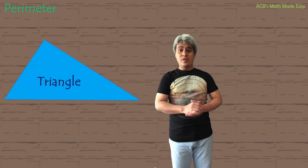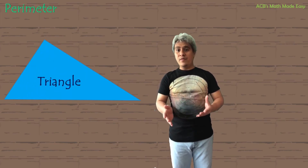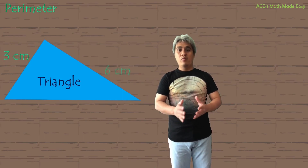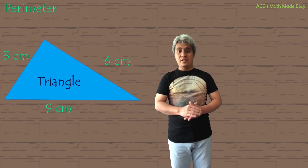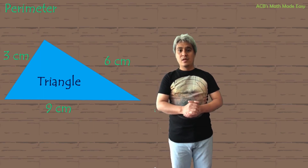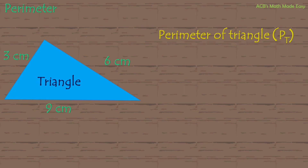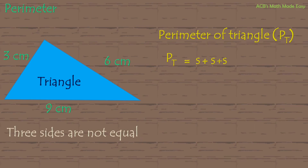We will now try how to get the perimeter of a triangle. We will put some different values on the three sides. One side will be 3 centimeters, the other is 6 centimeters, and the third side is 9 centimeters. So we will put PT for the perimeter of a triangle. The formula is PT equals S plus S plus S. In this triangle, all the sides are not equal, so it means we cannot simplify it — just add all three sides. Perimeter of the triangle equals 3 centimeters plus 6 centimeters plus 9 centimeters, so the perimeter of the triangle is 18 centimeters.